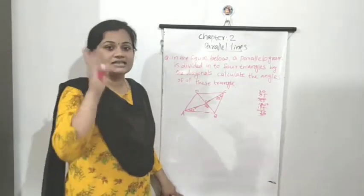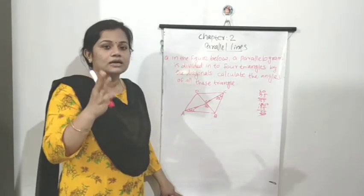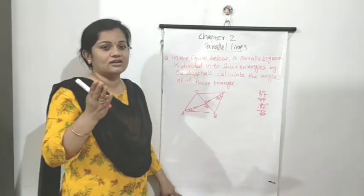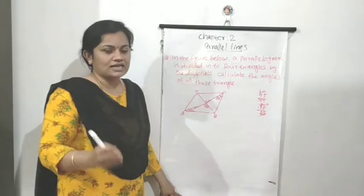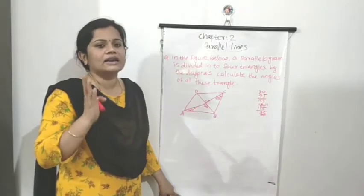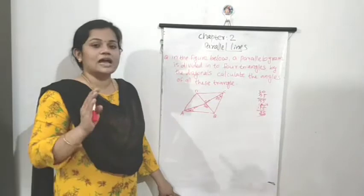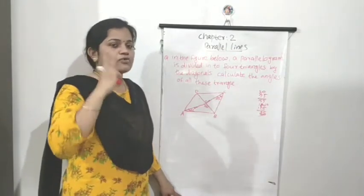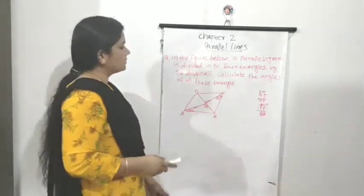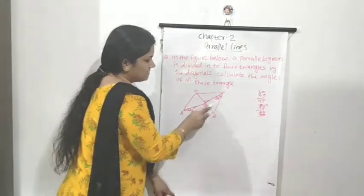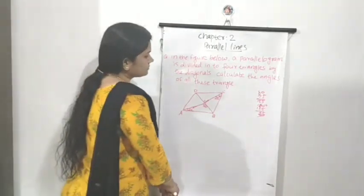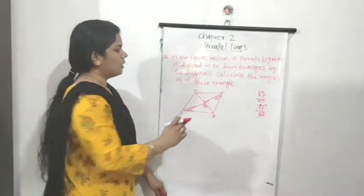We already know that a triangle has three angles. The sum of the interior angles of a triangle is 180 degrees. The total sum of all three angles is 180 degrees. Now, looking at the figure, some measurements are given: 25 degrees, 100 degrees, and 25 degrees. We need to find out all the angles.